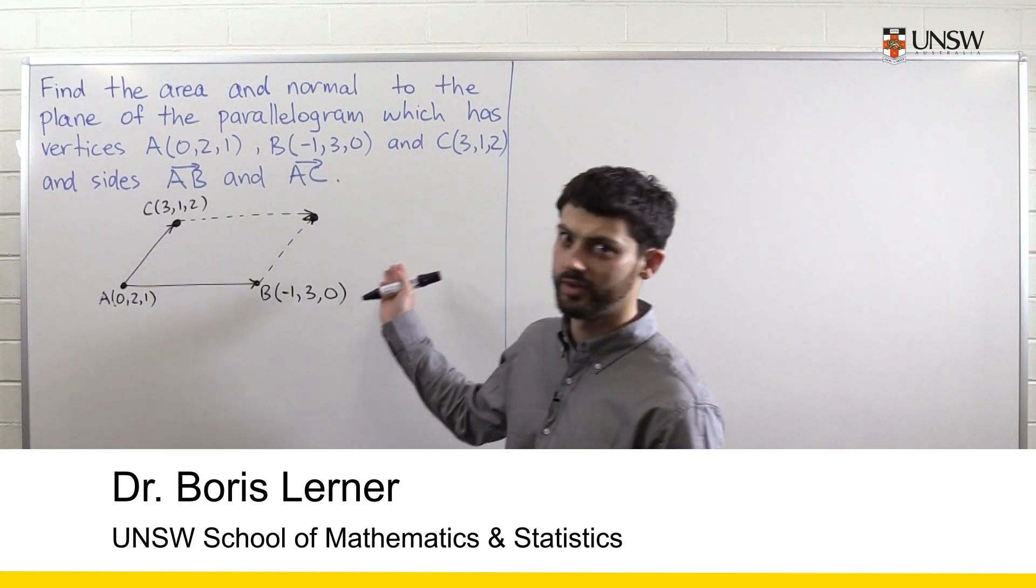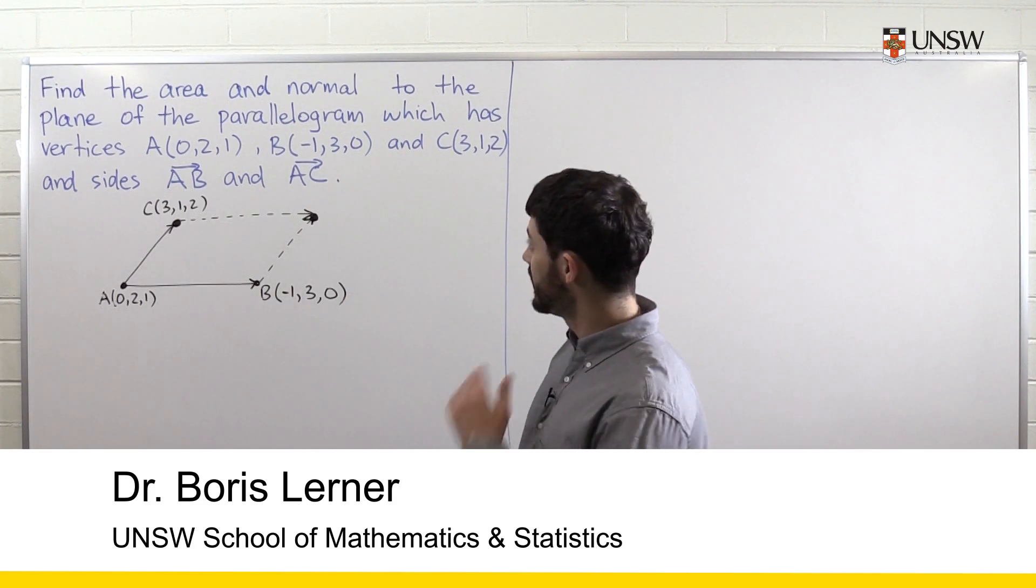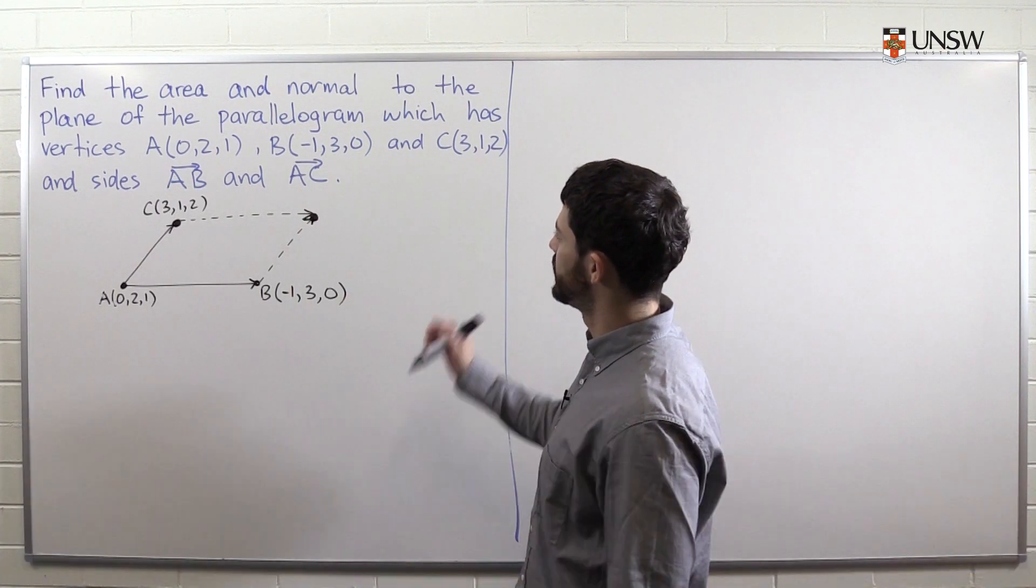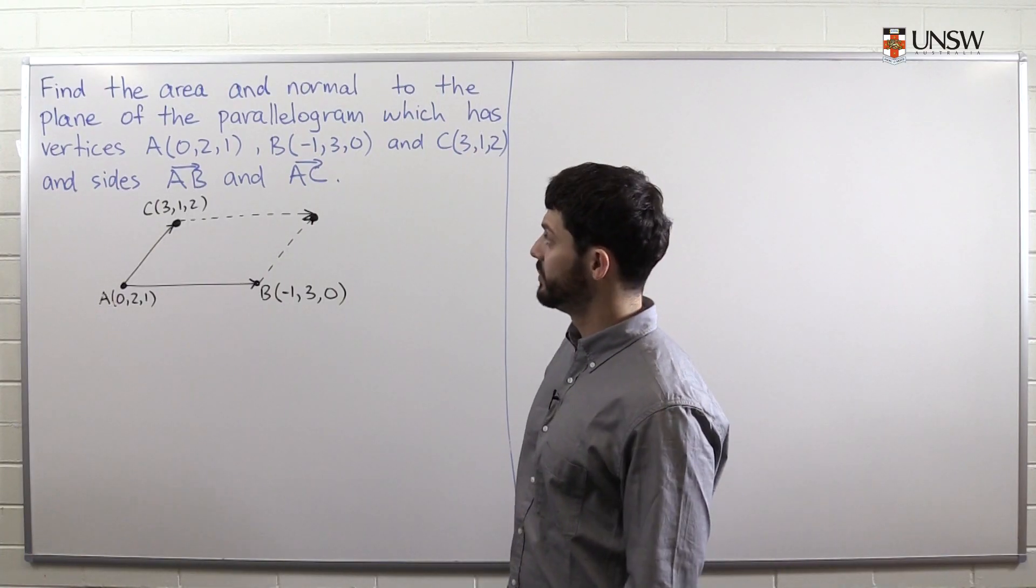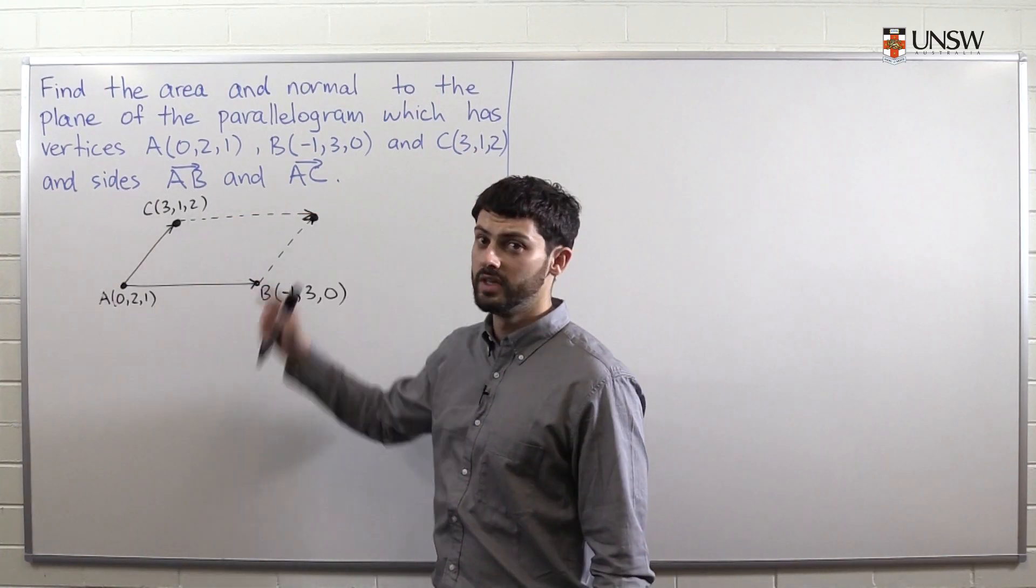Hi, my name is Boris, and today we're going to look at the following problem. Find the area and normal to the plane of the parallelogram which has vertices A(0,2,1), B(-1,3,0), and C(3,1,2), and sides AB and AC.